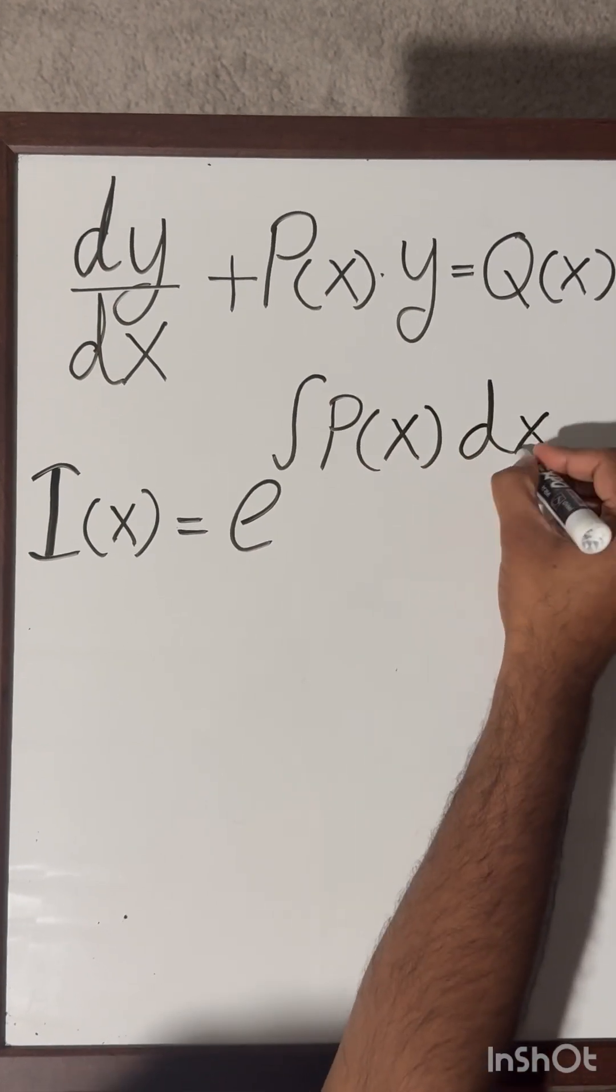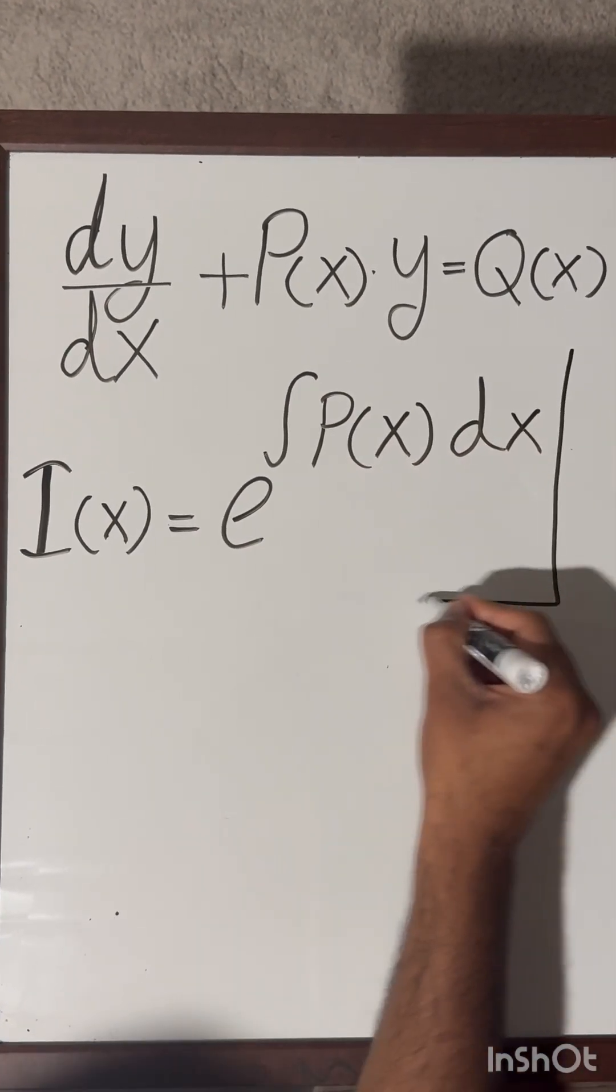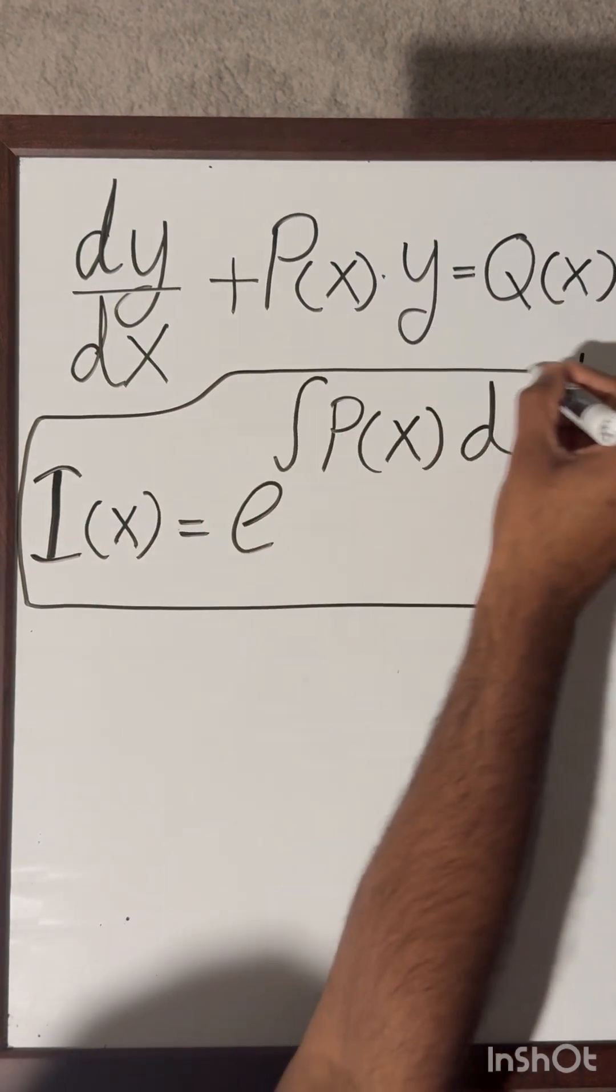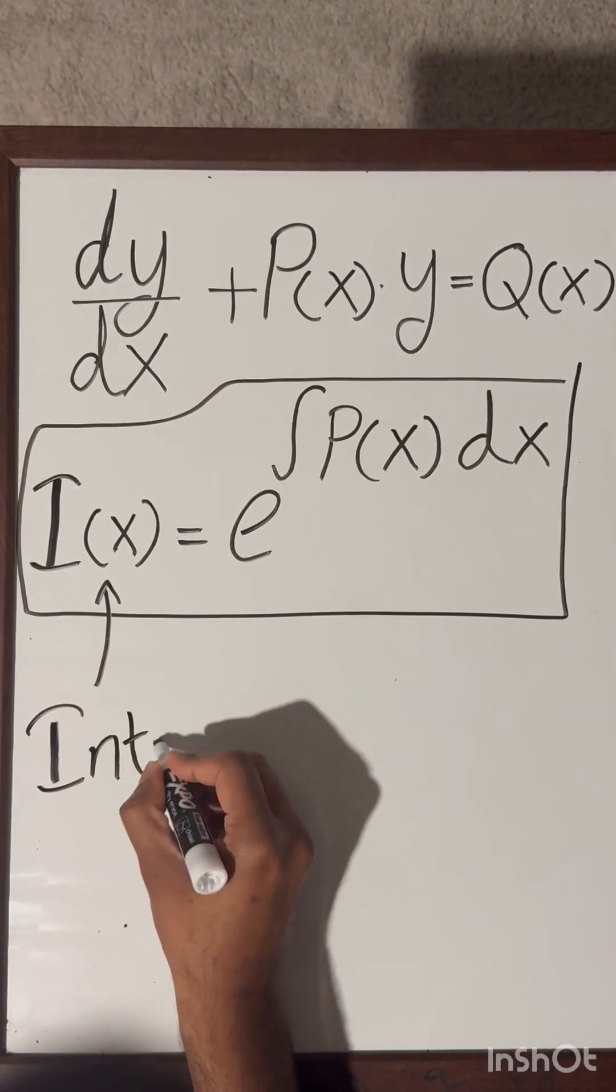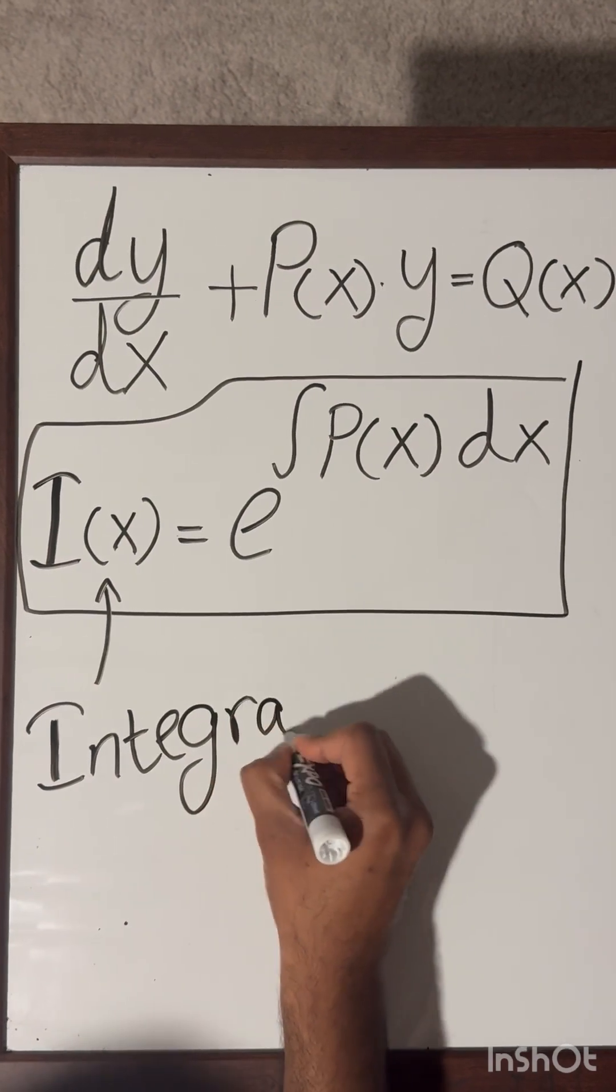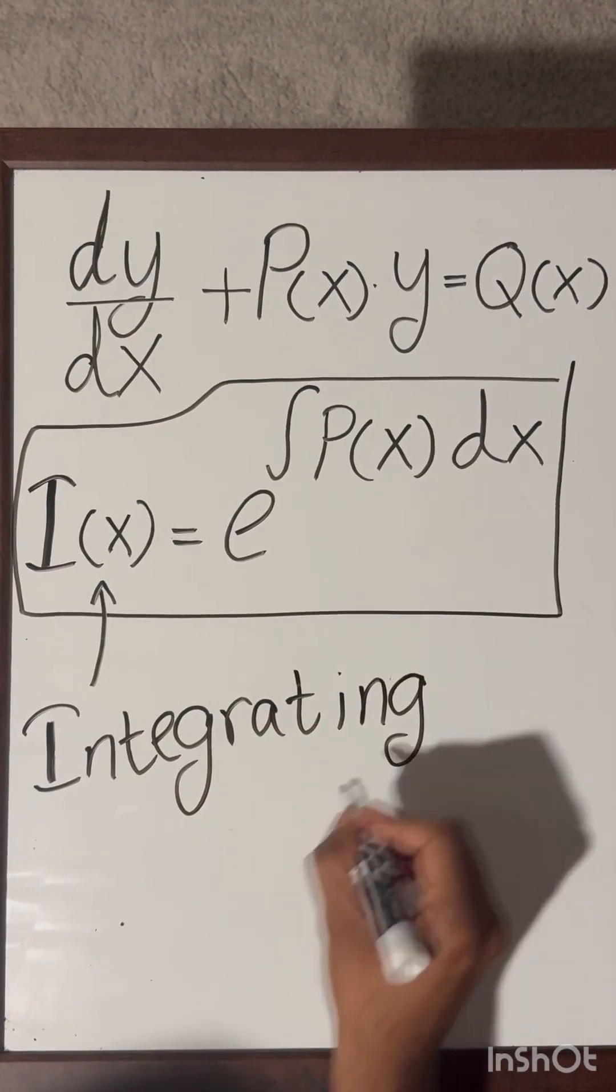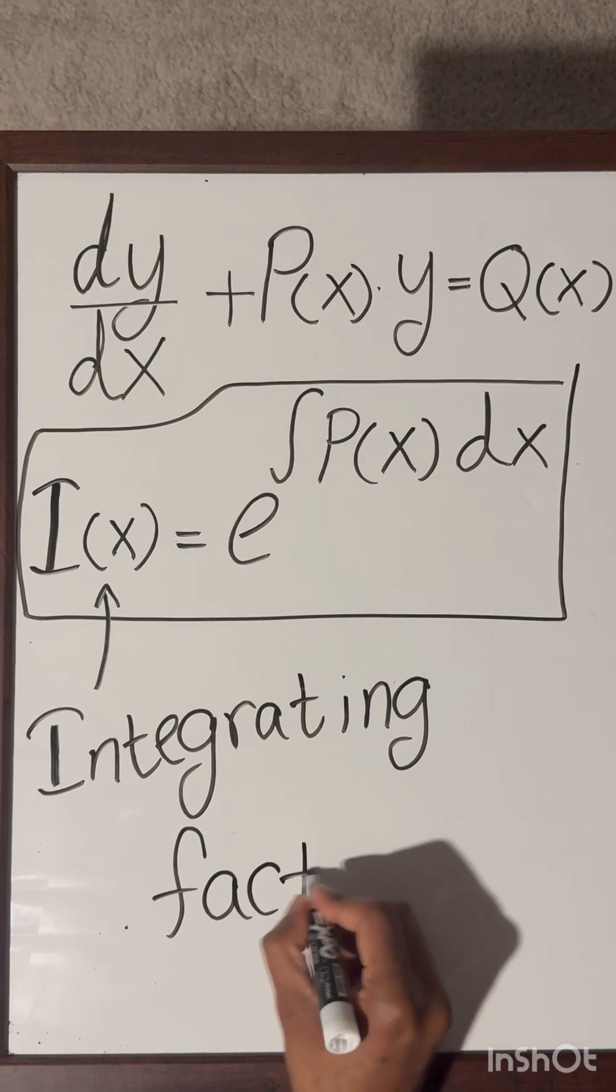We can then write down the integrating factor denoted by I of x as e to the power integral of the function p of x dx. So we are going to integrate the function p of x with respect to x.